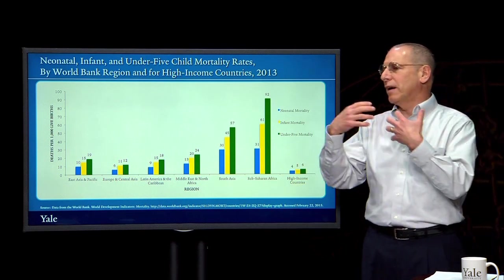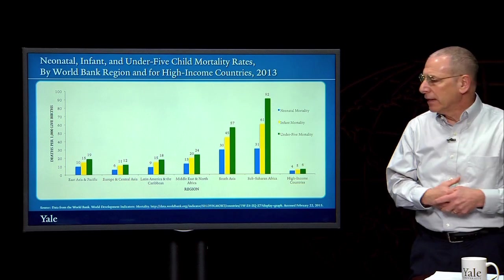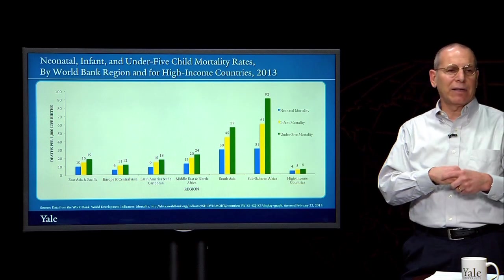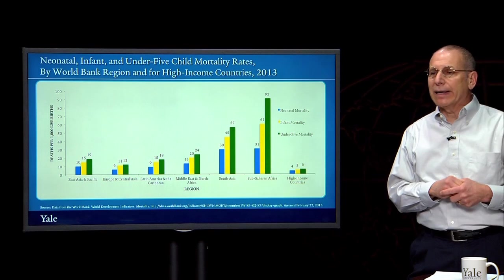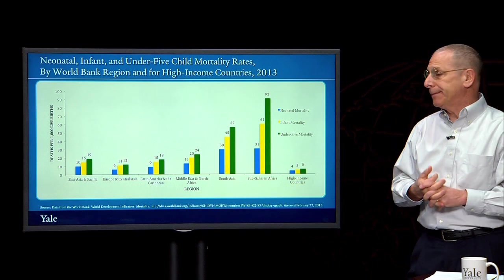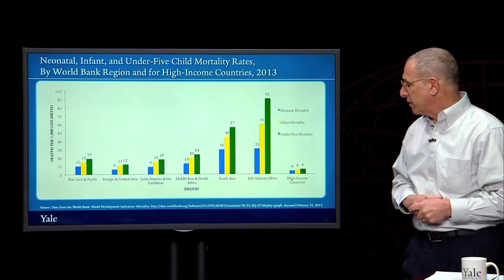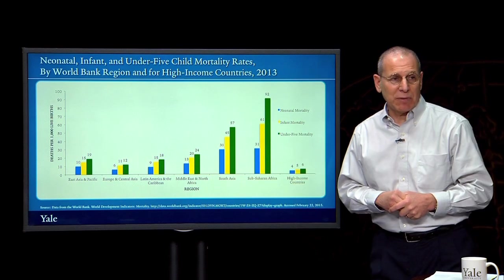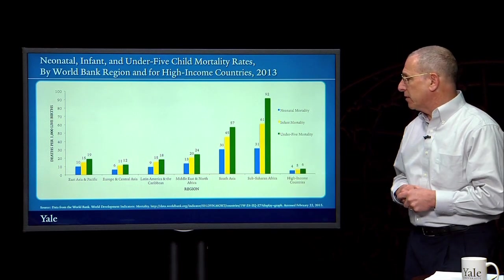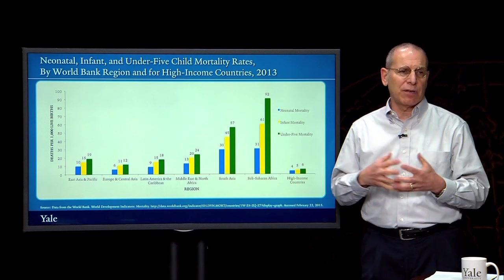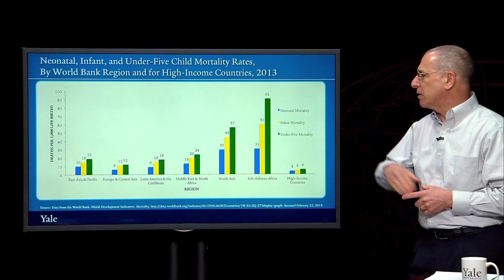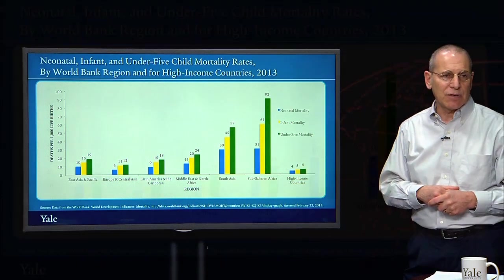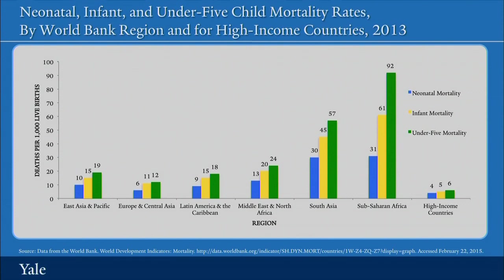The better off the country, the larger the share of total under-five deaths occurring in the neonatal period, because those children aren't exposed to many other risks — they're not likely to die of diarrhea, malaria, or HIV. Sadly, if they die, it may be of congenital anomalies, accidents and injuries, or cancer. By contrast, in sub-Saharan Africa, there's a really different pattern — high rates of neonatal, infant, and under-five child mortality with an almost equal risk of dying in each of those three periods.